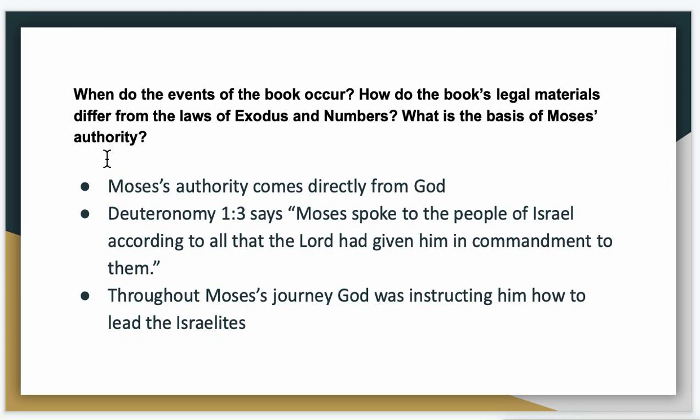Continuing on this question, talking about Moses' authority — we see Moses' authority coming directly from God. Deuteronomy 1:3 says Moses spoke to the people of Israel according to all that the Lord had given him in commandment to them. When we read these stories about Moses, we often see Moses and God directly speaking. God put Moses in charge to lead these people into the new Promised Land. The people know his connection with God and how God is leading them through this journey through Moses.